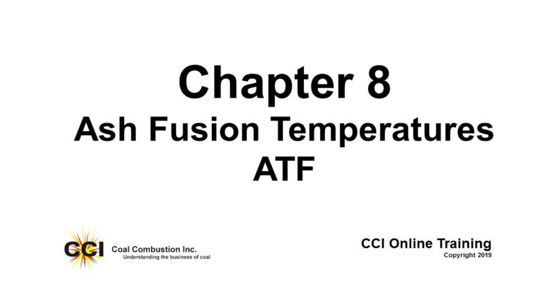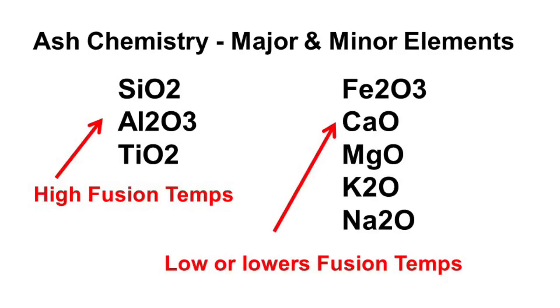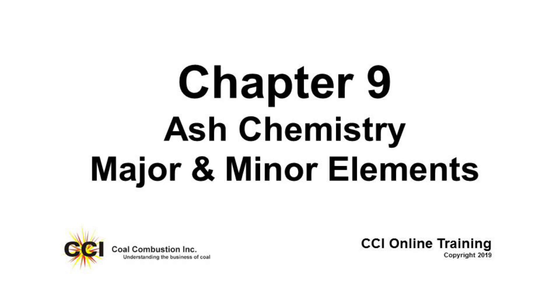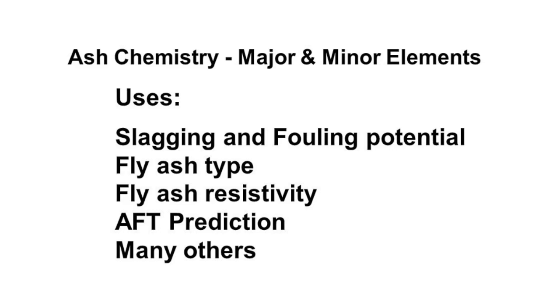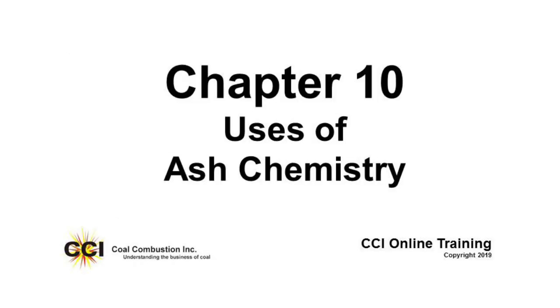In Chapter 9, we look at ash chemistry — the major and minor elements. We can tell a whole lot more about the properties of a coal by looking at the elements in the ash. Chapter 10 covers how to utilize those elements to predict slagging, fouling, and other characteristics of the coal. Please consider taking this training — it won't take long, but you'll have a much greater appreciation of what coal quality information can do for you and help you with your job. Thank you.